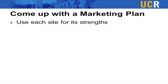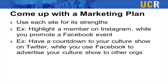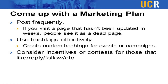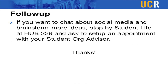In general, you want to come up with a marketing plan. Use each site for its strengths — highlight a member on Instagram while promoting a Facebook event the same day, or do a countdown on Twitter while using Facebook to advertise to other orgs. Post frequently, because a page that hasn't been updated in weeks looks dead. Use hashtags effectively — create custom hashtags for events and always hashtag UCR so people can see what's happening on campus. Consider incentives or contests for those that like, reply, or follow. If you want to brainstorm more ideas, stop by Student Life at Hub 229 and ask to set up an appointment with your Student Org Advisor. Thanks for watching.